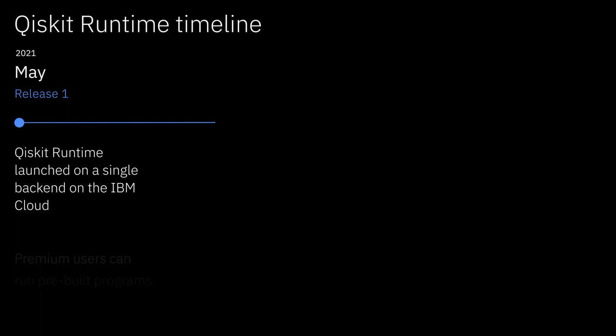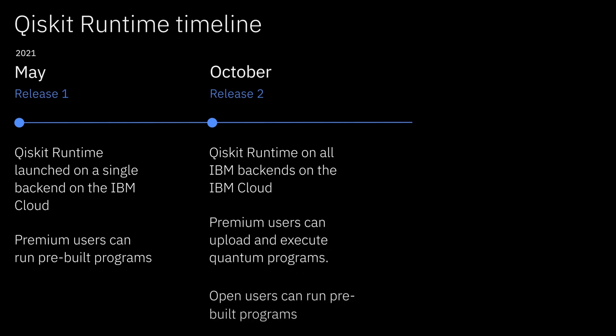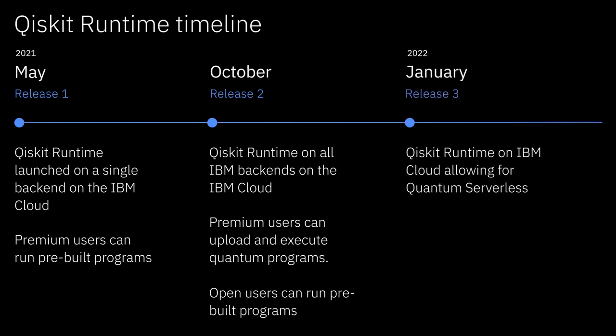To wrap up this section, let's look back at this year. In May, we launched the Qiskit Runtime on one IBM backend on the IBM Cloud. At that point, a small number of premium users could execute Qiskit Runtime programs pre-built by the IBM developer team. As of a few weeks ago, the Qiskit Runtime is now available on all backends on the IBM Cloud, and our premium users can upload and execute their own quantum programs. Next, we're going to look at using the Qiskit Runtime as a cloud-native service on the IBM Cloud.